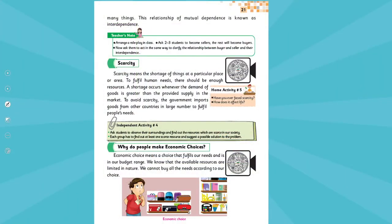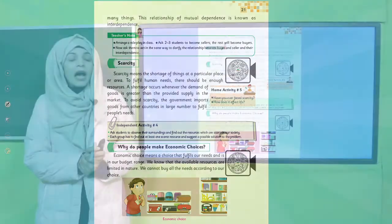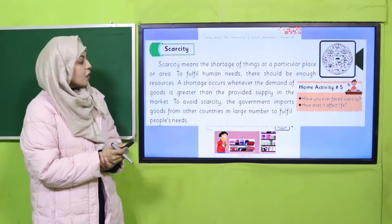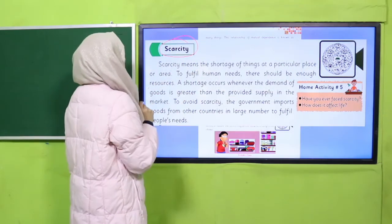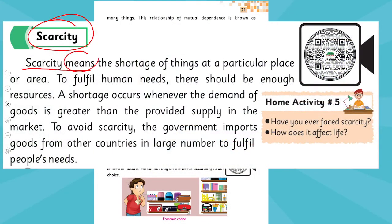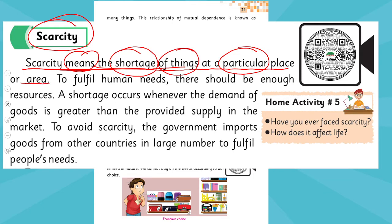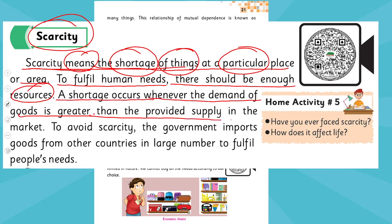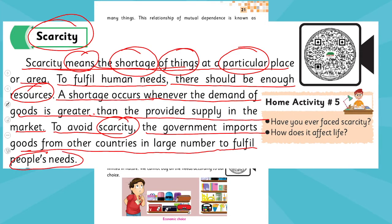My dear students, now quickly open page number 21 in your book so that we will read about scarcity. Put your fingers where I will read. Scarcity means the shortage of things at a particular place or area to fulfill human needs. There should be enough resources. A shortage occurs whenever the demand of goods is greater than the provided supply in the market. To avoid scarcity, the government imports goods from other countries in large numbers to fulfill people's needs.